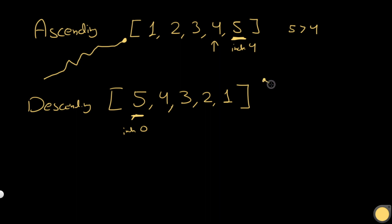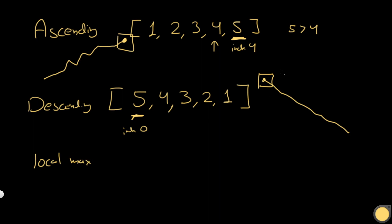Now we have the case in between, which is a more common case — this is where we have a local maximum. In the ascending and descending cases, those were global maximums. A local maximum is when the immediate neighbors are smaller than the actual number. To the left of it, it's decreasing; to the right of it, it's also decreasing, but the value itself is greater than both neighbors. We might have several local maximums.